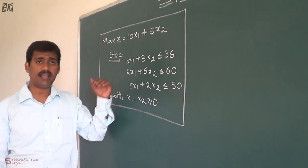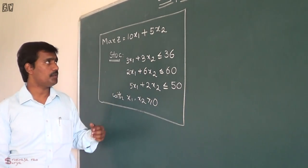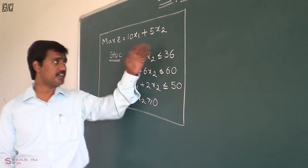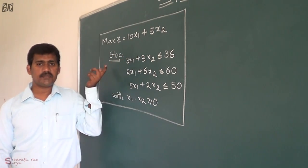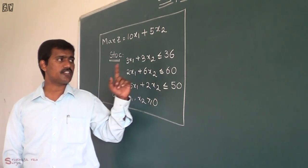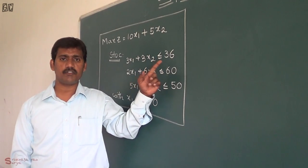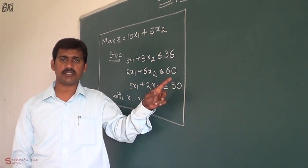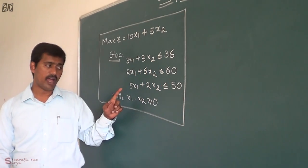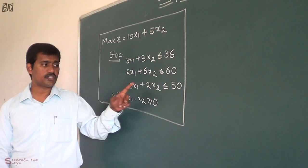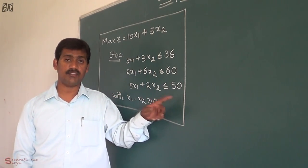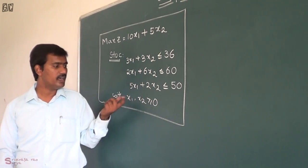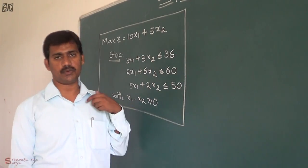We have a LPP problem: maximize z equal to 10x1 plus 5x2, subject to constraints 3x1 plus 3x2 less than or equal to 36, 2x1 plus 6x2 less than or equal to 16, and 5x1 plus 2x2 less than or equal to 50, with non-negativity constraints x1, x2 greater than or equal to 0.